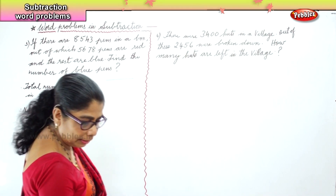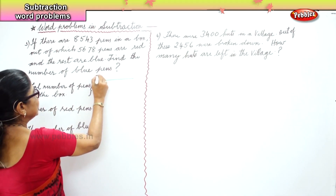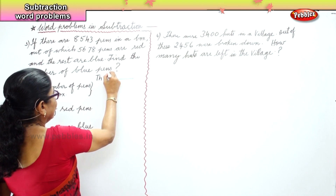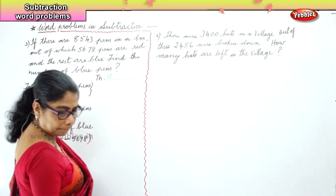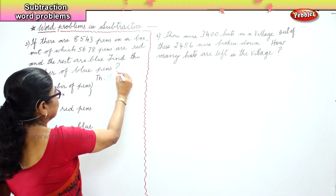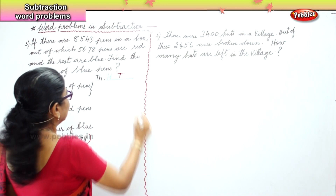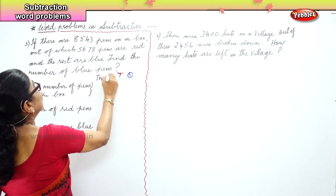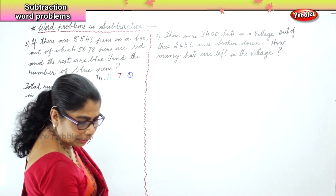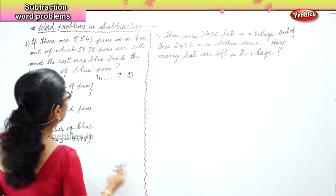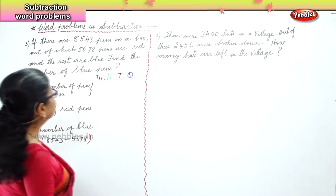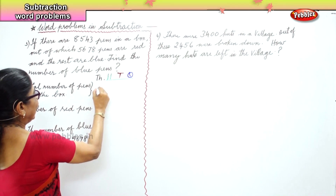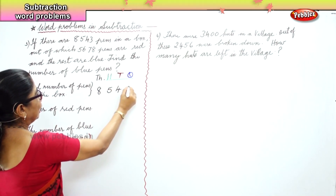First we write down thousands, then hundreds, tens, and ones. We'll put the numbers down. Total number of pens in the box is eight thousand five hundred and forty-three, so you put eight thousand five hundred and forty-three in the columns.